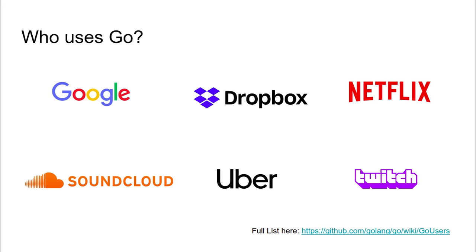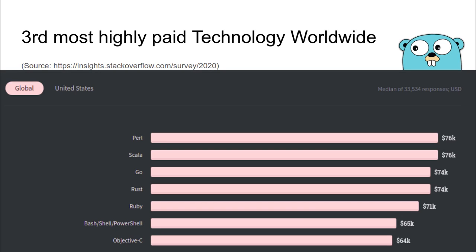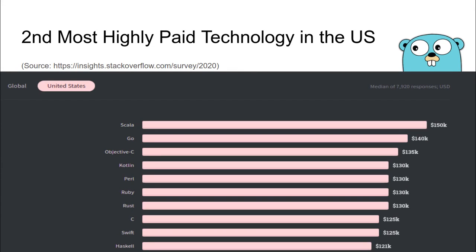In the next slide we have the most fun bit — and that is the salary. According to the Stack Overflow survey in 2020, Go is the third most highly paid technology worldwide, only behind Perl and Scala. Just as an honorable mention, you do not even see JavaScript or Python in the top seven. Looking at the same insights for the United States, Go is the second most highly paid technology. Go has achieved all of this within such a short span of time, and many organizations are adopting Go and really looking for good Go developers — so definitely anyone has incentive in learning Go.